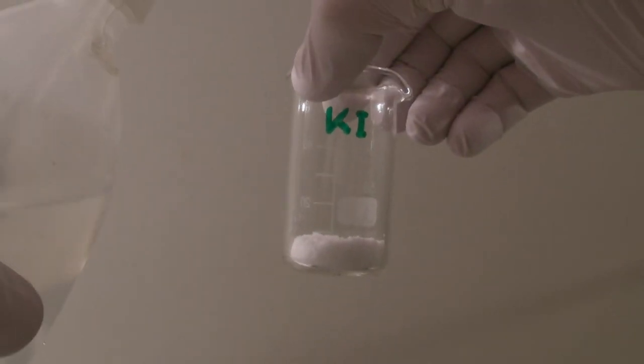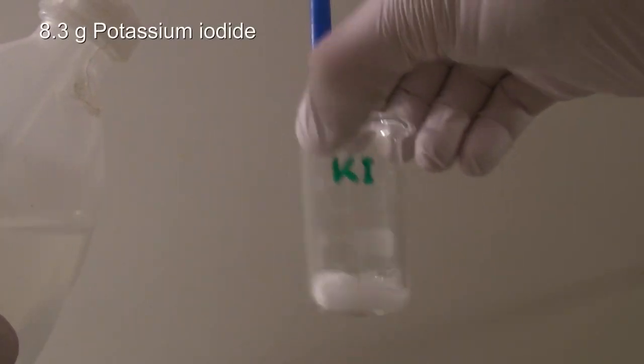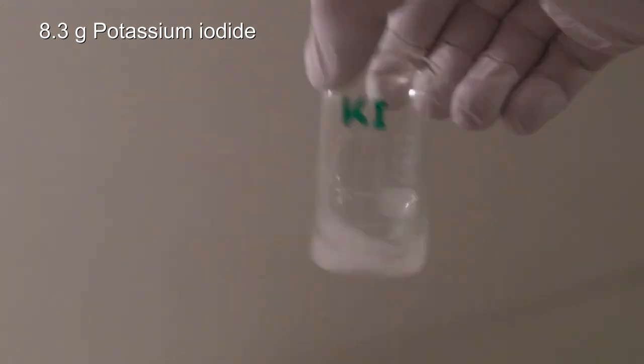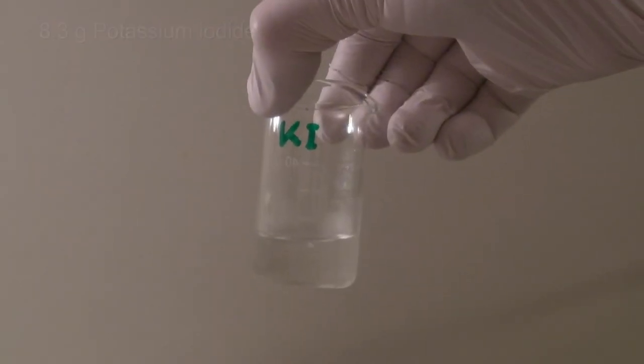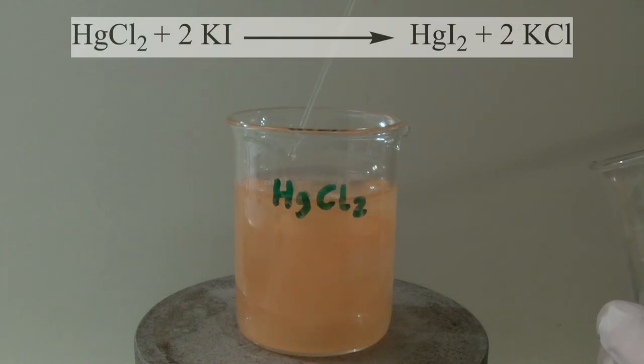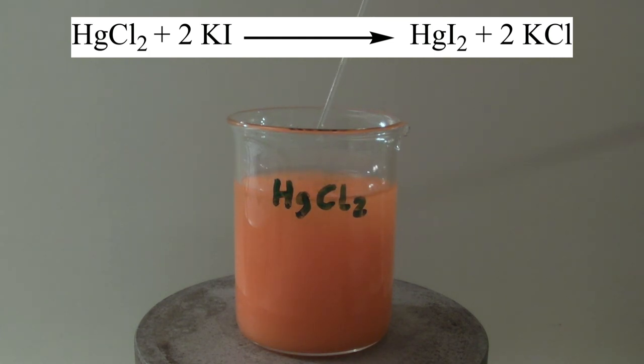Then a saturated solution made of 8.3 grams of potassium iodide and distilled water was prepared. The iodide solution was added to the mercury chloride solution in portions with a pipette while stirring. Here an ion exchange reaction takes place, where the mercury chloride and potassium iodide react to form mercury iodide and potassium chloride.